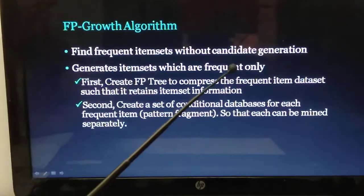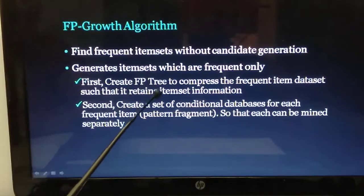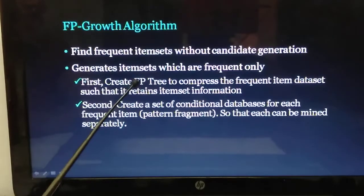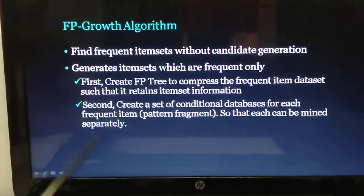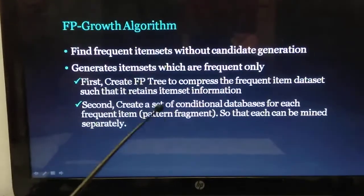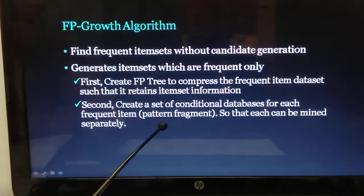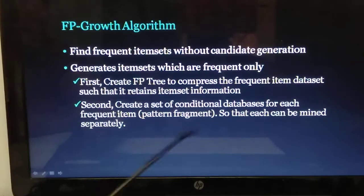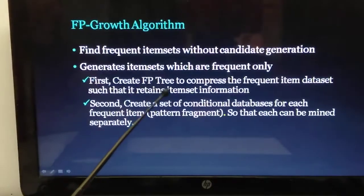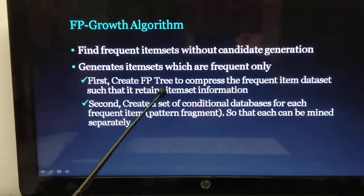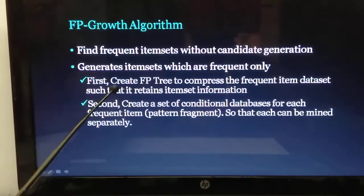There is another problem in the Apriori algorithm: one scan of the database is not enough to get the frequent patterns. In FP Growth, since all the information is already present in the FP tree created in the first step, in the second step everything we require can be obtained from this FP tree and we do not need to scan the database again. The first step is to create the frequent pattern tree, which will have all the information in the database.